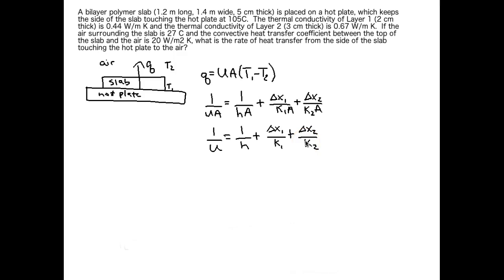We are given our convective heat transfer coefficient, it is 20 watts per meter squared Kelvin. We are given our delta X's, those are our thicknesses of the layers. We're given our K's, our thermal conductivities for each layer. So let's plug all those numbers in and solve for 1 over U.